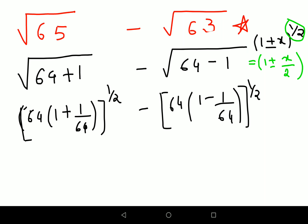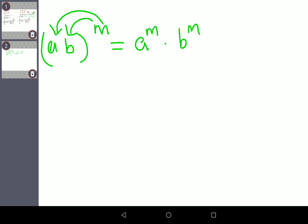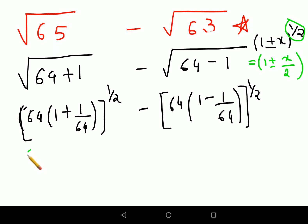Those of you who don't remember the law of indices: a times b, the whole raised to m, when you have something like this, the index goes with each of the products. So it can be written as a raised to m times b raised to m.